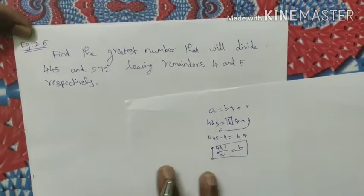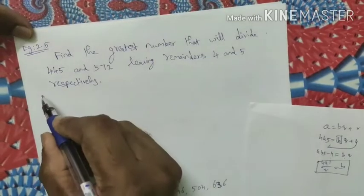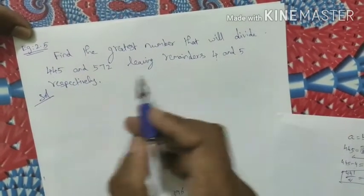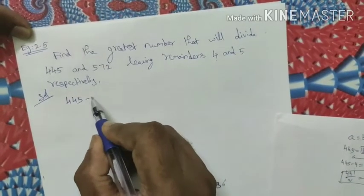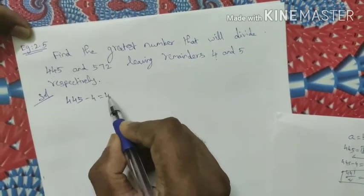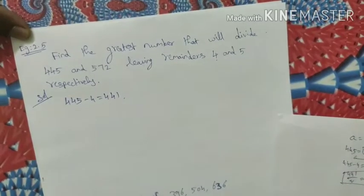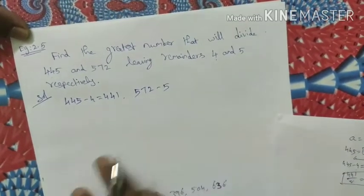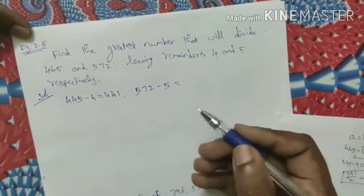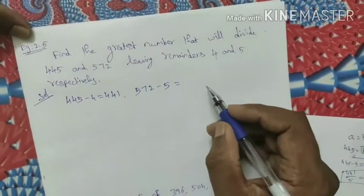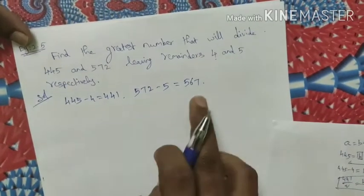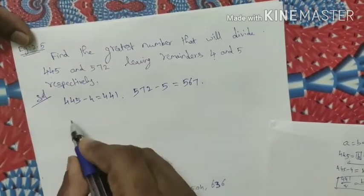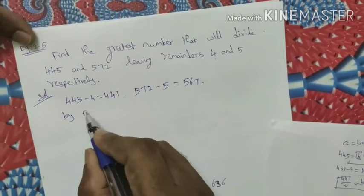Using the same concept with the formula a equals bq plus r: since the remainders are 4 and 5 respectively, we subtract them from the original numbers. So 445 minus 4 equals 441, and 572 minus 5 equals 567. These are the actual numbers we will find the HCF of.